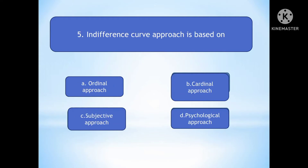Question number five: Indifference curve approach is based on? Option A is Cardinal approach. Option B is Ordinal approach. Option C is Subjective approach. Option D is Psychological approach. The right answer is Ordinal approach, because our satisfaction is subjective — we cannot measure it numerically. When something cannot be counted, we use the ordinal approach. Things that can be measured go under the Cardinal approach.